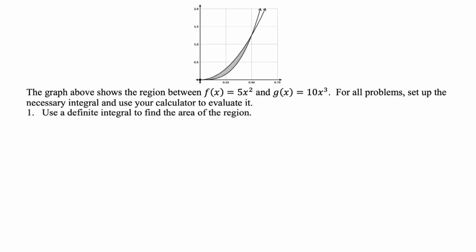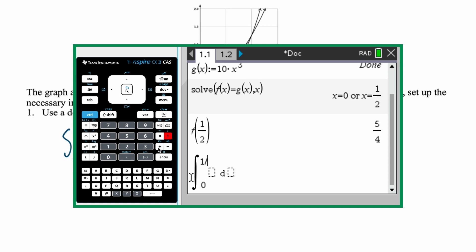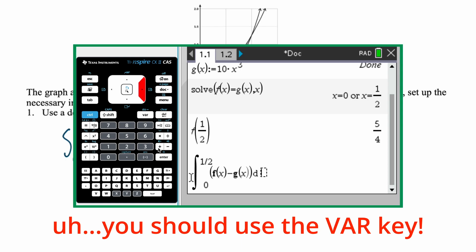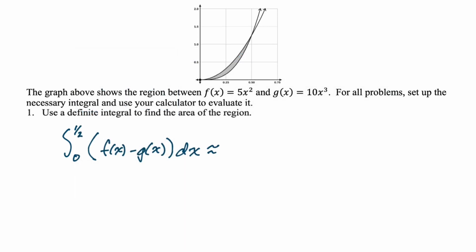Question number one says: use a definite integral to find the area of the region. We need to define some functions on the calculator, find the intersection points — which are 0 and 1 half — and then set up our integral. The integral goes from 0 to 1 half, top minus bottom: f of x minus g of x, dx. The answer is approximately 0.052.